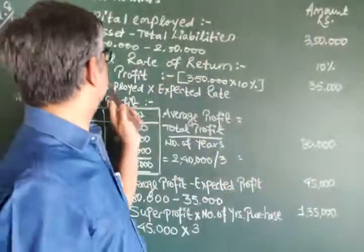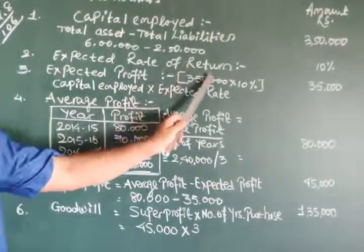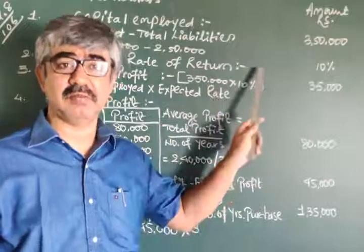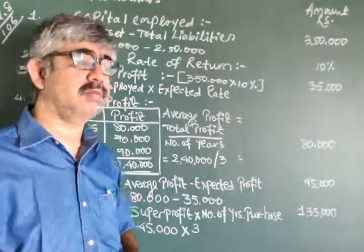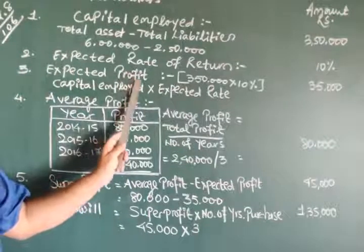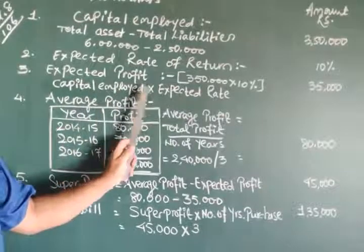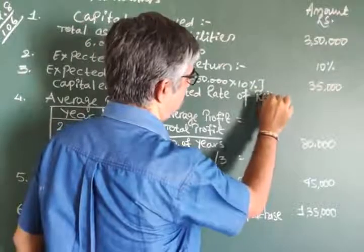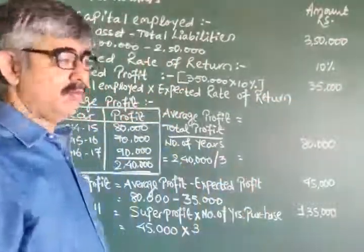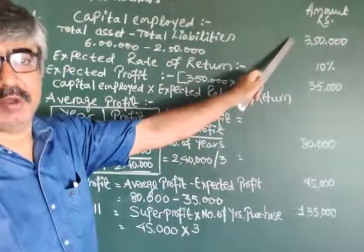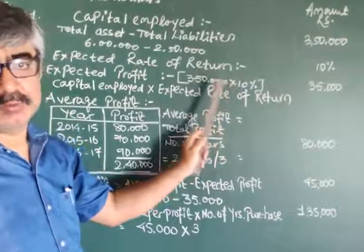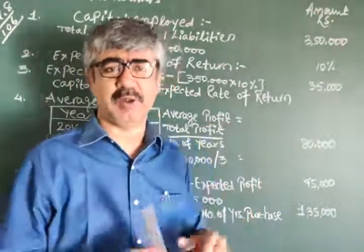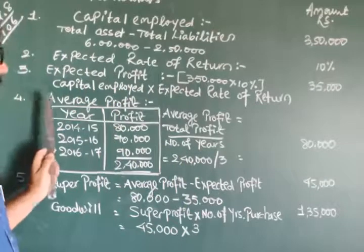Next, that is expected rate of return. Here expected rate of return is already given, 10%. You are not supposed to do anything. Just put the digits over here, whatever the rate is given. Third, expected profit. Formula is capital employed into expected rate of return. So 3 lakh 50,000 capital employed, first step, into second step 10% comes to 35,000. Very simple, the calculations are normally easy in this particular question.